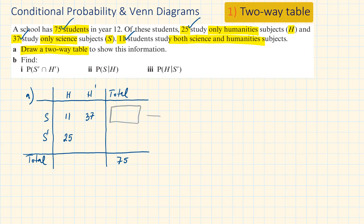We can work out the total who study science by adding 11 and 37. From here we can work out the total of students who don't study science by doing 75 minus 48. Now we have enough information to work out the number of students who don't study science and don't study humanities. That is 27 minus 25, which is 2.